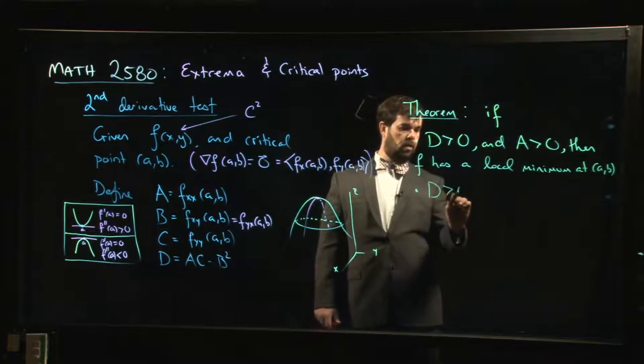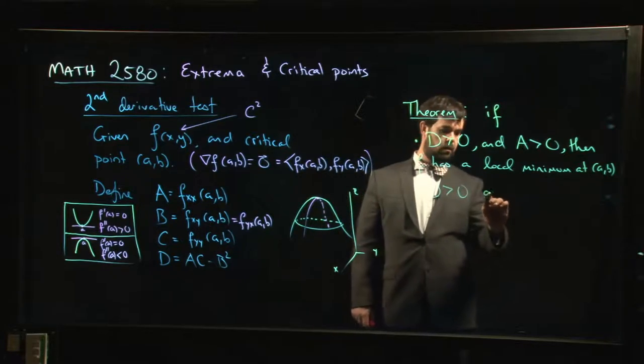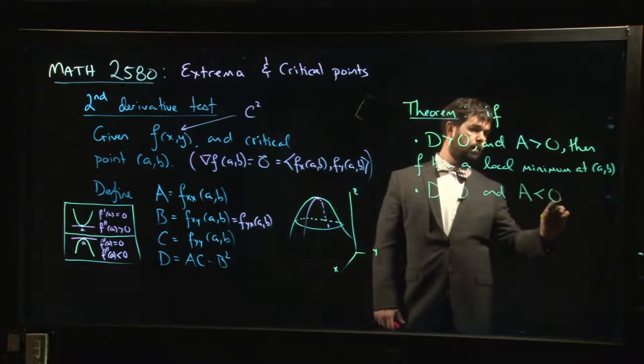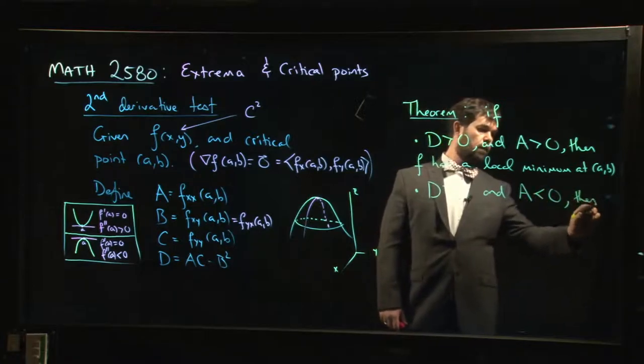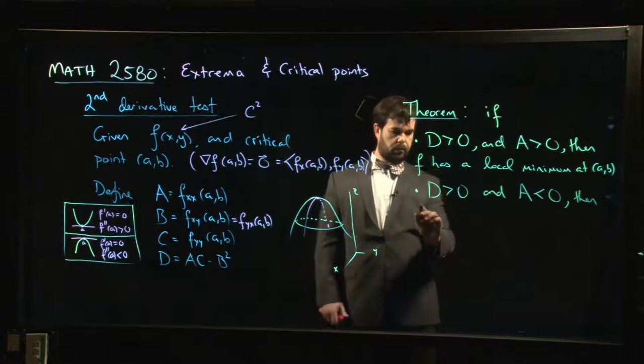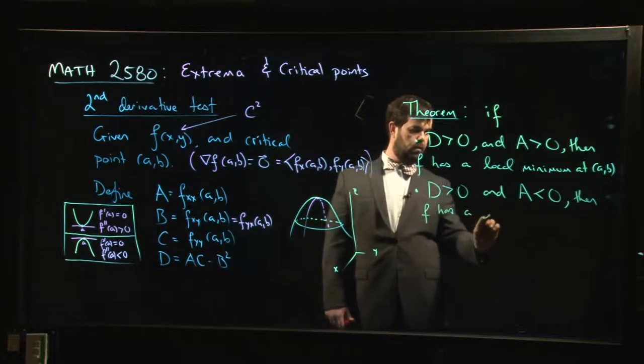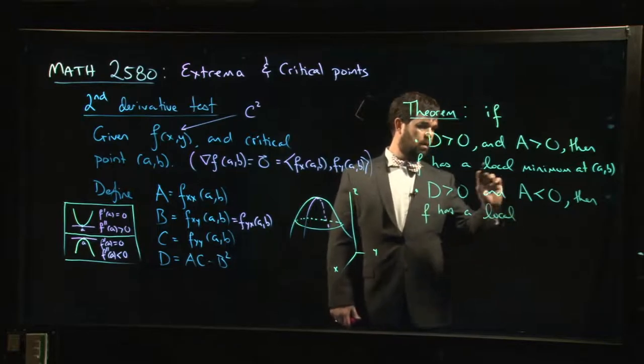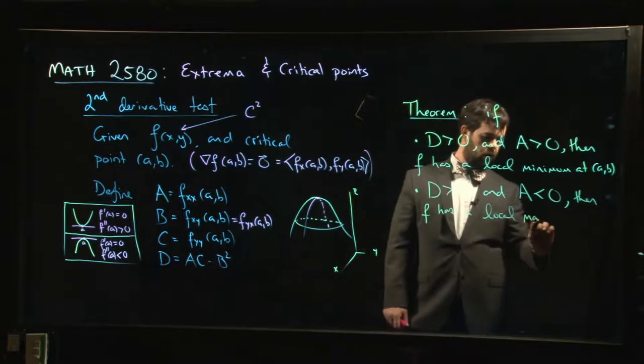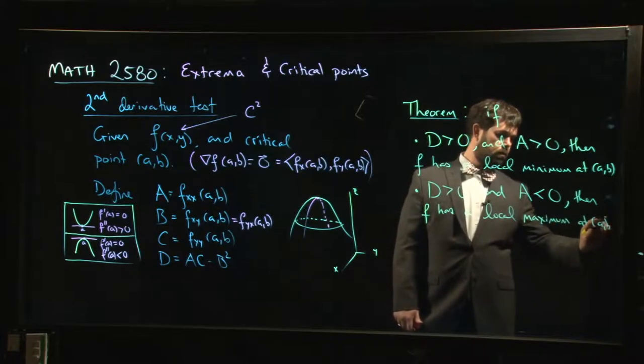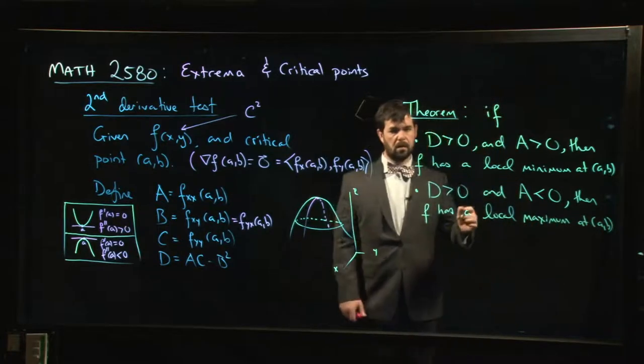If D is positive and A is negative, then F has a local maximum at (a,b).